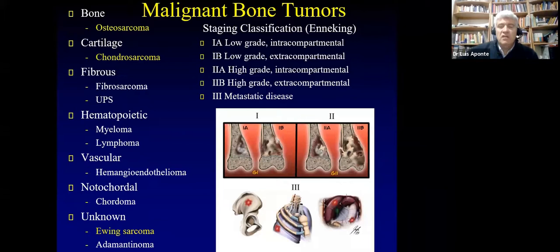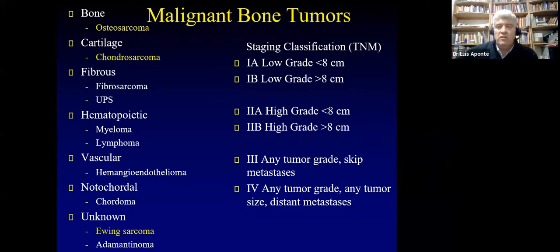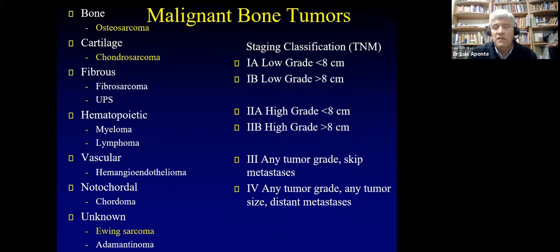Regarding staging, the old system was the Enneking stage, divided into stage one (low grade), stage two (high grade), and stage three (metastatic disease). Nowadays we use the AJCC or TNM system, where low grade remains stage one, but size is becoming more important: less than eight centimeters is stage 1A, more than eight centimeters is stage 1B. Stage three indicates skip metastasis to other bones, and stage four indicates distant metastasis such as pulmonary metastasis.